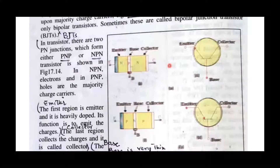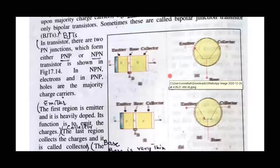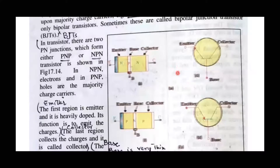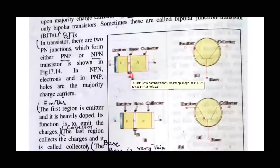When you join the P and N doped pieces, a junction forms where charge carriers collect at the center, creating a potential barrier. When an external voltage is applied, the potential barrier breaks and the charge carriers begin to flow. When you join the transistor's three portions, there are two junctions: one between the base and emitter, and a second between the base and collector.